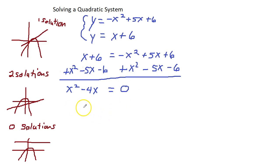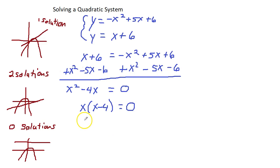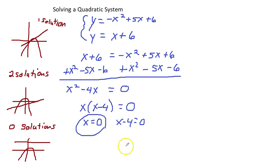Now, when we factor this, I can just factor out an x. So I have x times (x minus 4) equals zero. Setting each factor equal to zero: x equals zero, and x minus 4 equals zero. Adding 4 to each side, we get x equals 4.